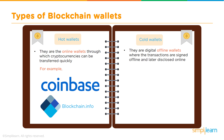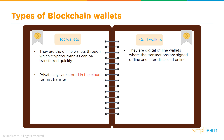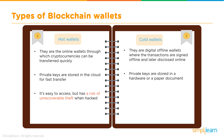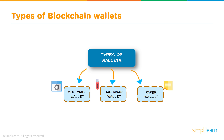Cold wallets are digital offline wallets where transactions are signed offline and then later disclosed online. They are not maintained on the cloud; they are maintained offline for high security. Examples of cold wallets are Trezor and Ledger. In hot wallets, private keys are stored in the cloud for faster transfer. In cold wallets, private keys are stored in separate hardware disconnected from the internet, or in a paper-based document. Hot wallets are easy to access 24/7 but have a risk of unrecoverable theft when hacked. Cold wallets help protect from unauthorized access and online vulnerabilities.